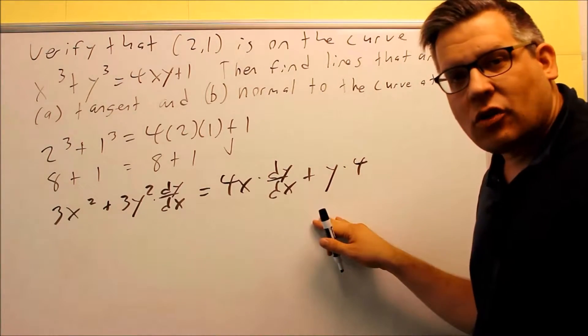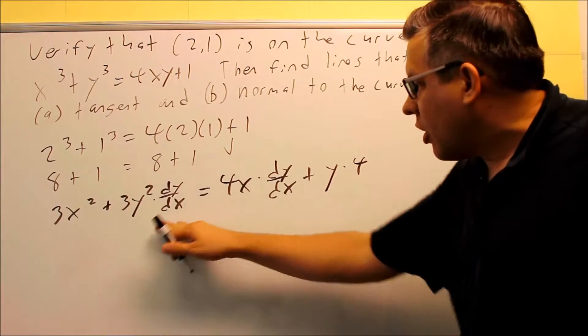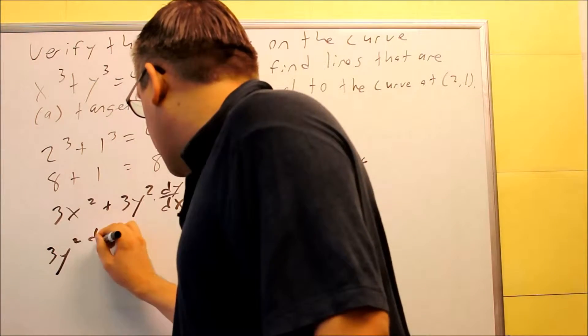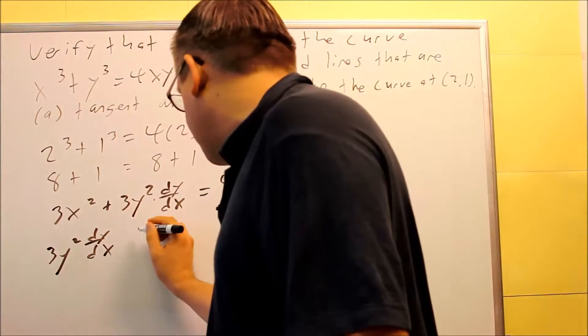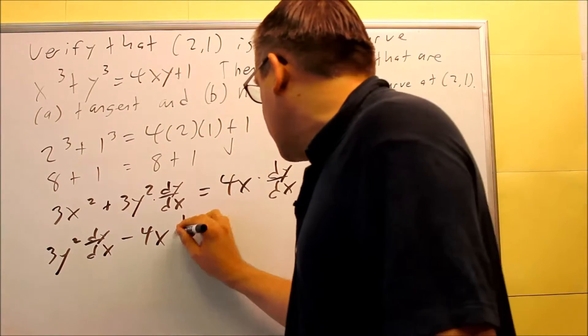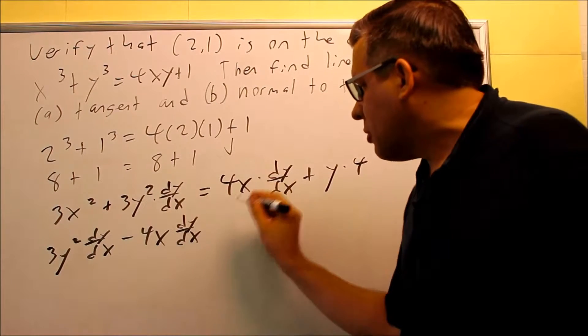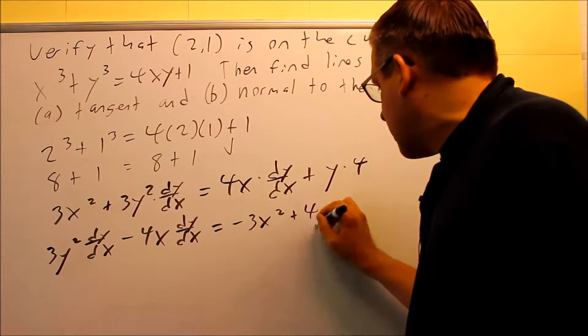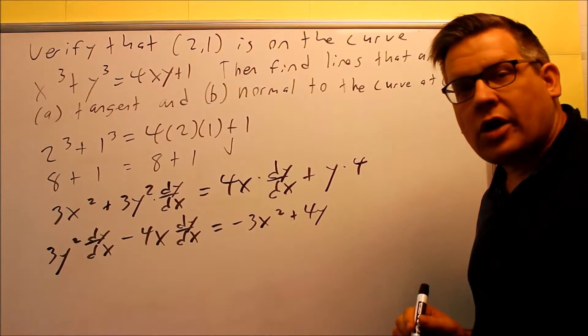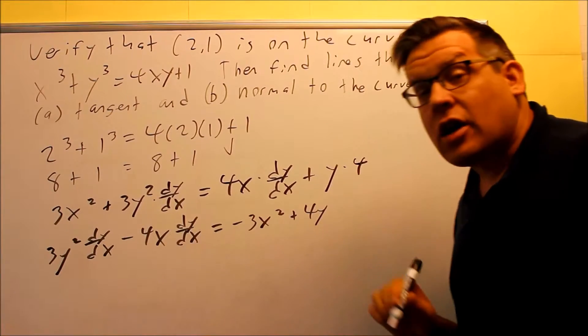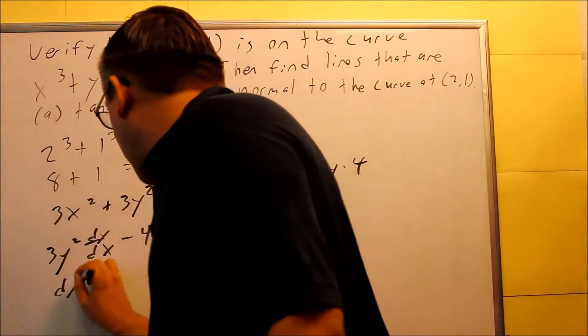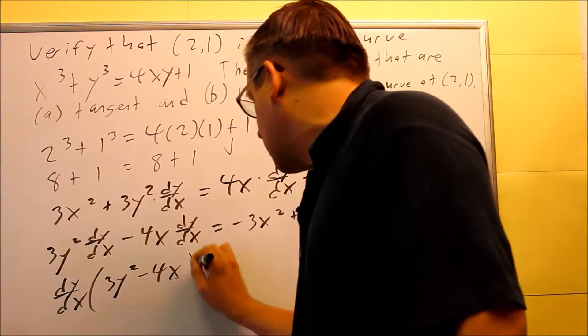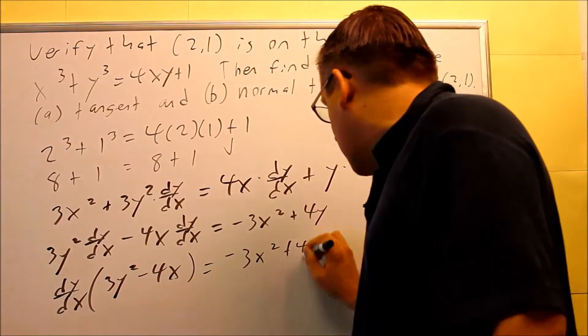Next step, we have to solve for dy dx. So we need to get all the terms with dy dx on one side of the equation. So I'm going to leave the 3y squared dy dx on one side. I'm going to subtract the 4x dy dx. The 3x squared I'm going to move across the equal sign, so I get negative 3x squared, and then plus 4y. So I'm putting all the terms with dy dx on one side of the equation. And now I want to factor out a dy dx. So if I factor out dy dx, then I'm going to get 3y squared minus 4x, and then everything else is the same on this side.